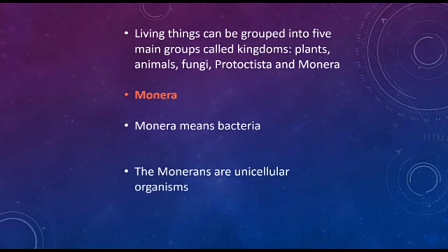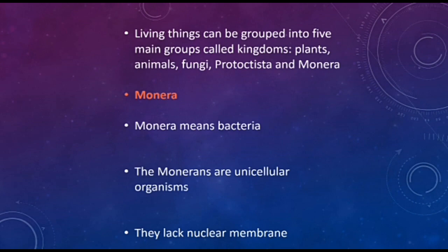The monorans are unicellular organisms. Unicellular means that all bacteria consist of only one cell — they are single-celled organisms. They lack a nuclear membrane. This means that, like a house with no walls around it, monera have a nucleus without a membrane wall around it. We can compare the membrane to a wall here.